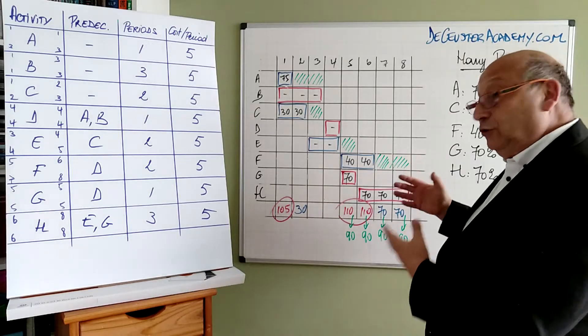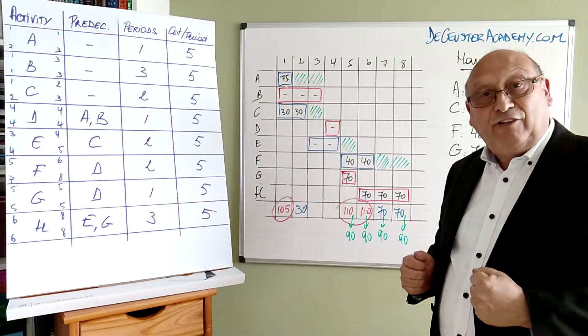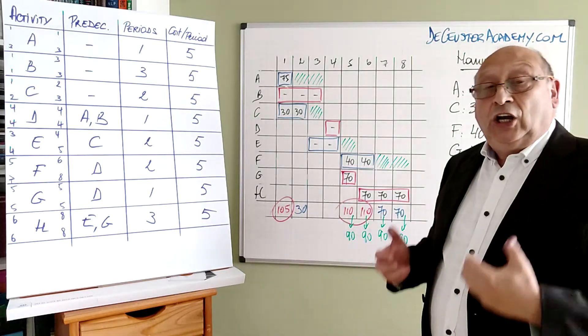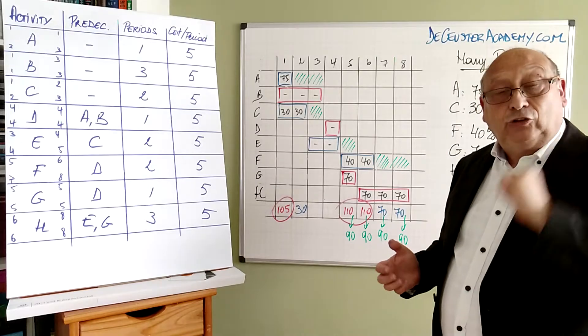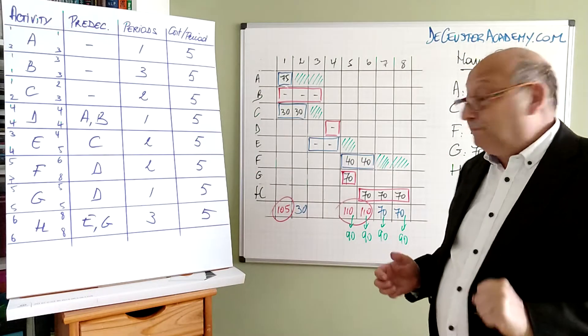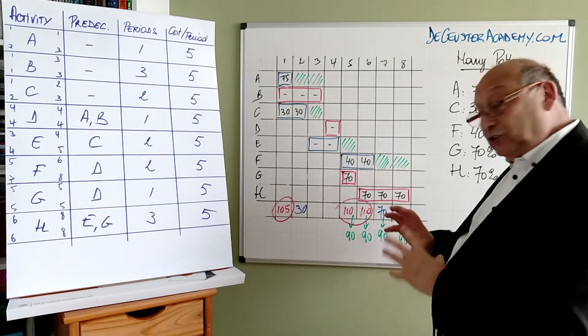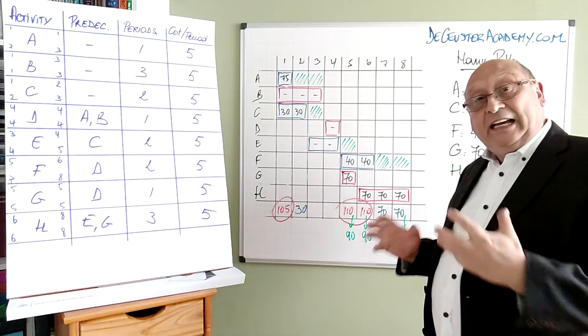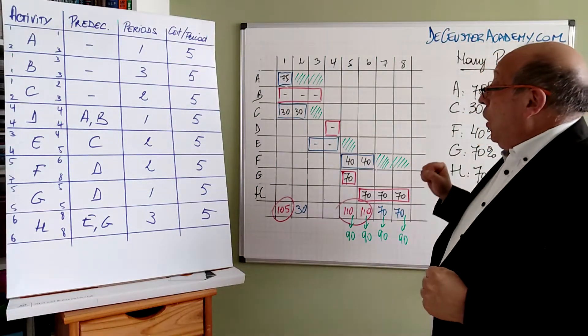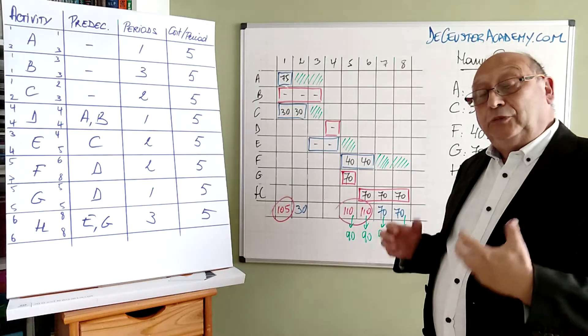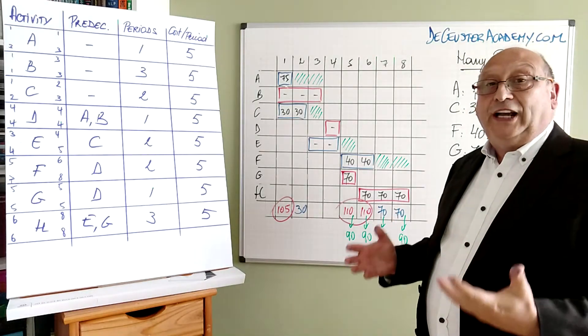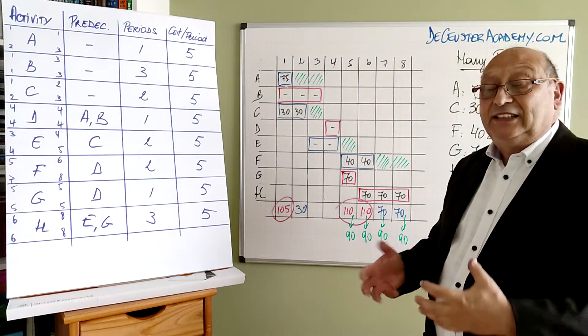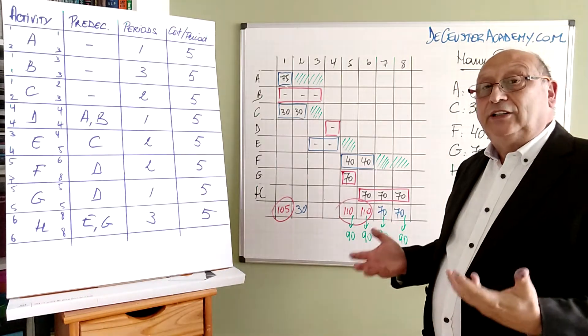We can say, okay, we can use the slack. In this case, we call this smoothing. We call it smoothing because we can use the slack and the duration of the project did not change. On the other hand, when we cannot resolve the problem using the slack, the duration of the project will probably increase or will increase. And in that case, we will call it leveling.